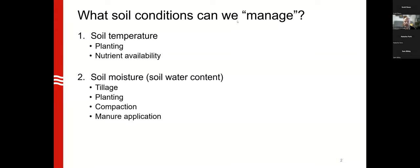So why do we worry about soil temperature and moisture? We know that soil temperature affects when we plant, how the seed grows, and microbial activity in the soil, which in turn affects nutrient availability for your plants. Soil water content also affects other management practices such as tillage, seed placement, soil-to-seed contact, compaction, and nutrient application.